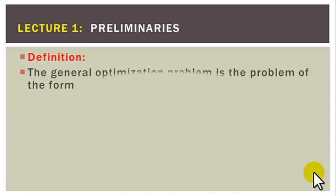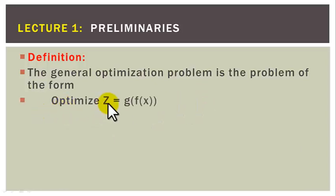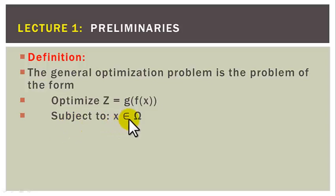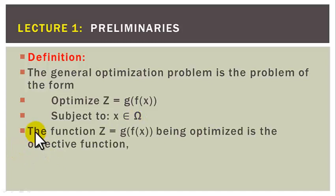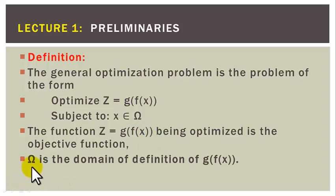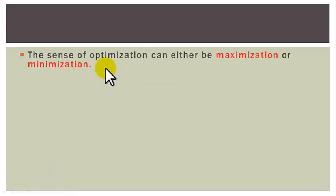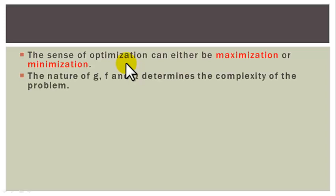Definition. The general optimization problem is of the form: optimize z equal to g of f of x, subject to x element of omega. The function z equal to g of f of x being optimized is called the objective function, and the set omega is the domain of definition of the objective function. The sense of optimization can either be maximization or minimization. The nature of g, f, and omega determines the complexity of the optimization problem.